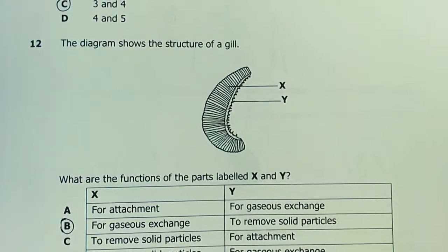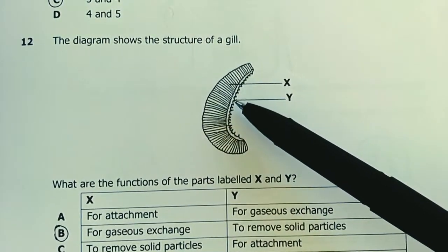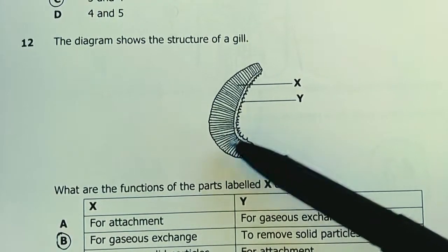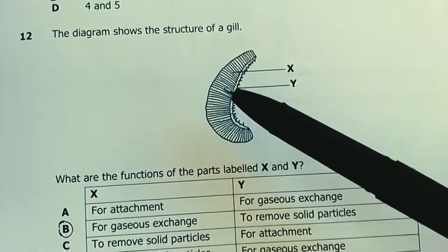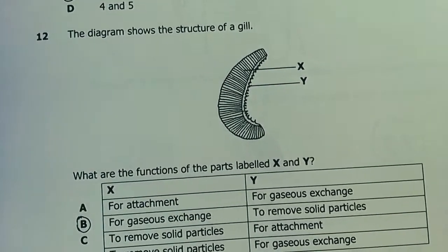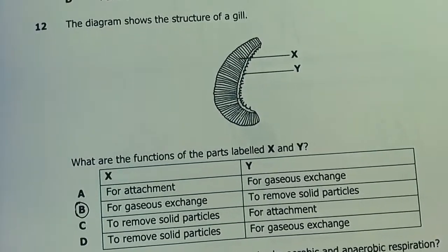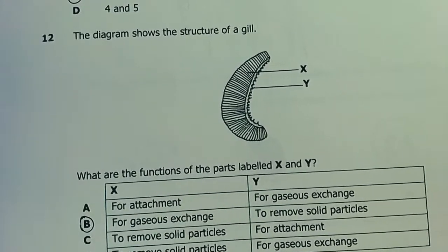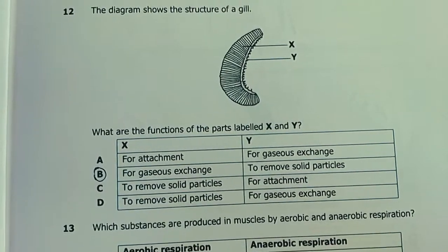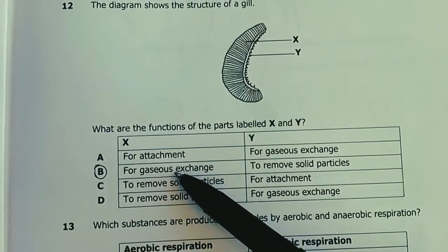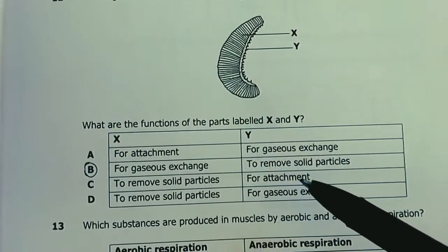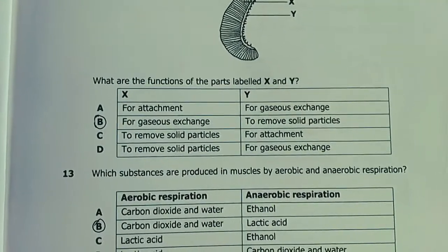Question 12. The diagram shows structure of a gill: gill filaments, gill rakers like spines or spikes, and the gill bar for attachment. On the gill filaments we find gill lamellae, which are the respiratory sites, the actual sites where gaseous exchange takes place, like the alveoli in lungs. What are the functions of parts labeled X and Y? X for gaseous exchange, then Y for removal of solid particles. They're called gill rakers. They rake or remove solid particles from water as it passes from the mouth to the gills.